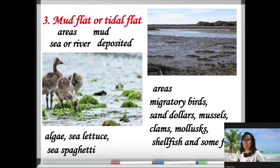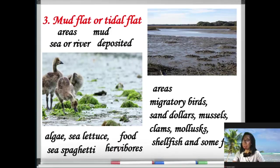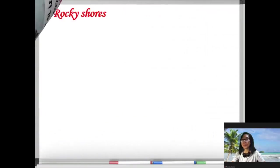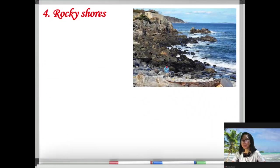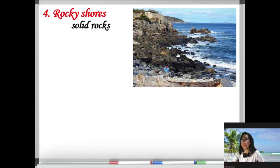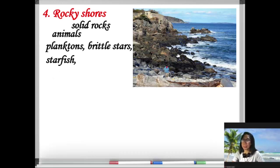Algae like sea lettuce and sea spaghetti provide food for the herbivores that live in the mud flat area. Number four is the rocky shores — areas where solid rocks are found. The animals in these habitats include planktons, brittle stars, starfish, and hermit crabs.